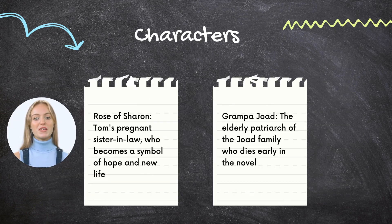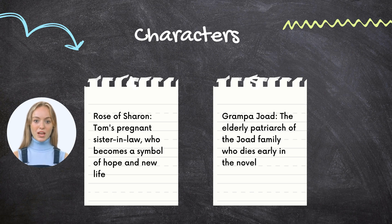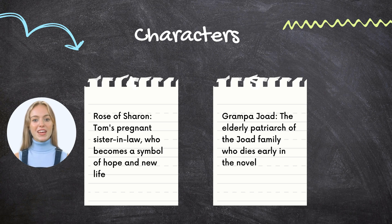Rose of Sharon is the daughter-in-law of the Joad family, initially portrayed as immature and self-absorbed. Throughout the novel, she transforms into a symbol for potential growth and renewal in the face of hardship and adversity. Her pregnancy, fears, and eventual decision to breastfeed a starving stranger represents personal growth and social change amidst systemic inequality. Her character embodies themes of family, community, and resilience that are central to The Grapes of Wrath.